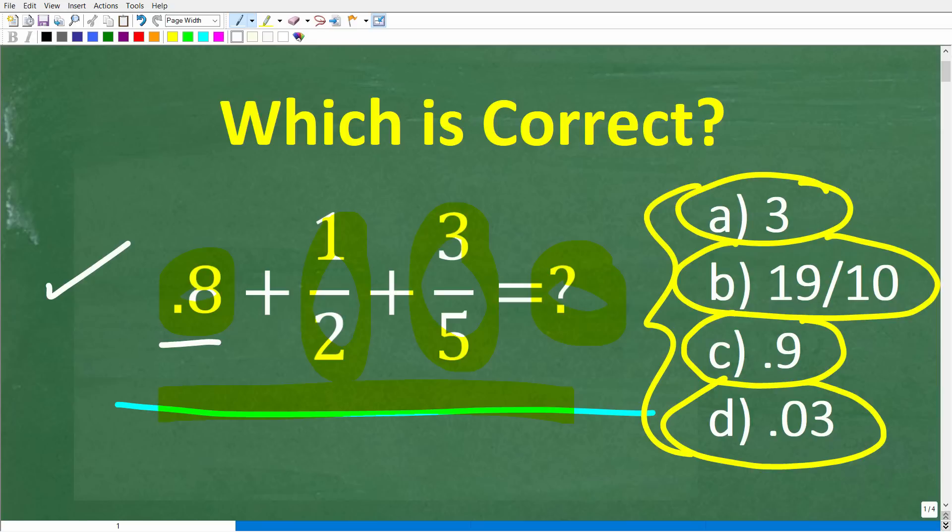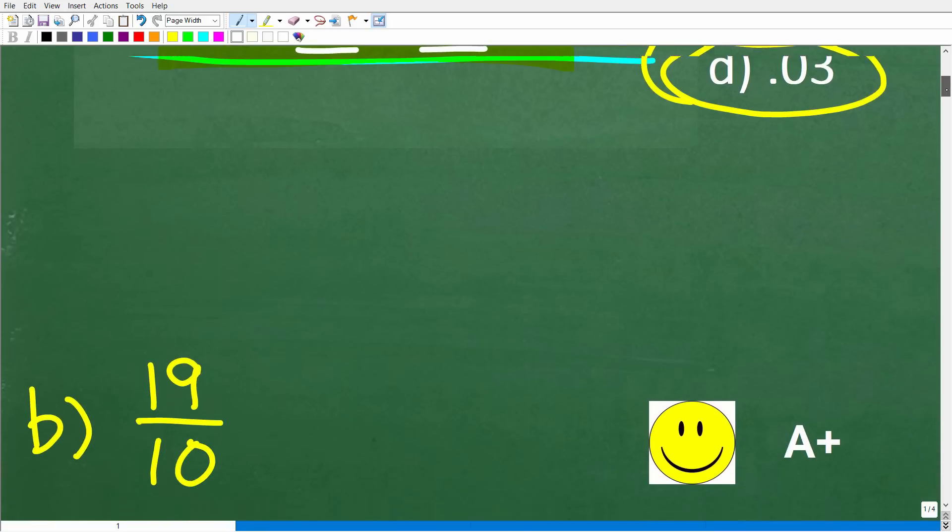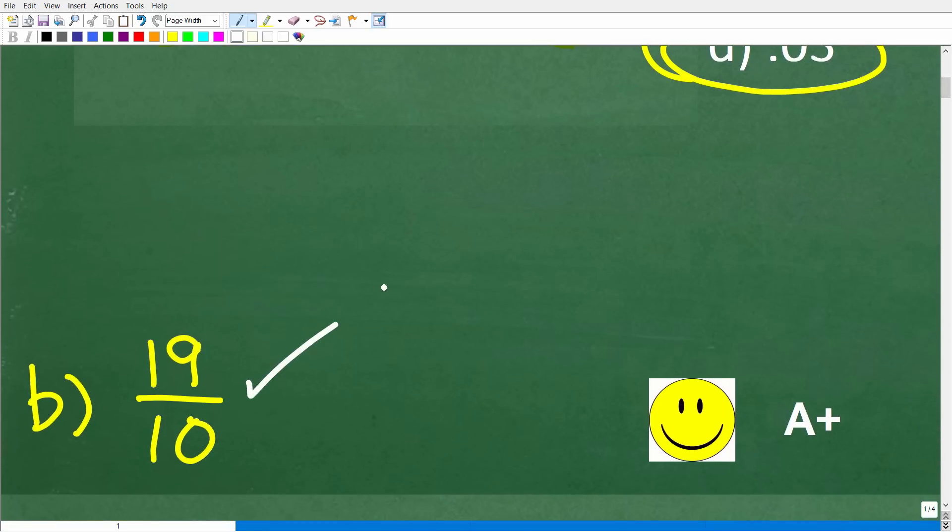Once again, 0.8 plus 1 half plus 3 fifths. What is the answer? Well, the correct answer here is B, 19 over 10.